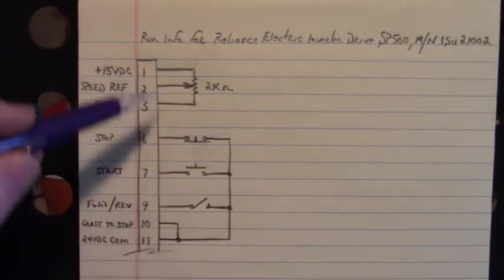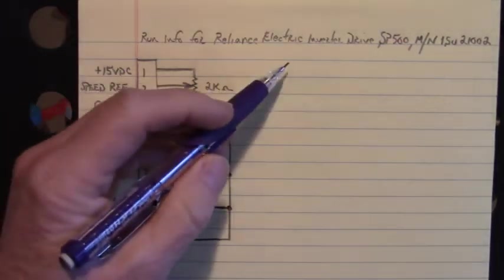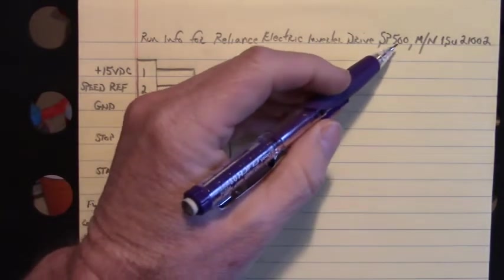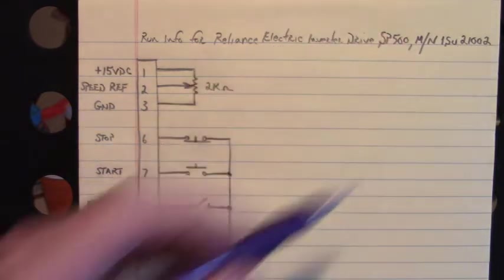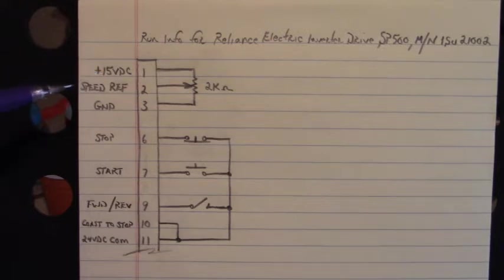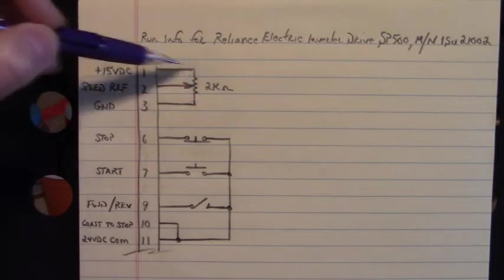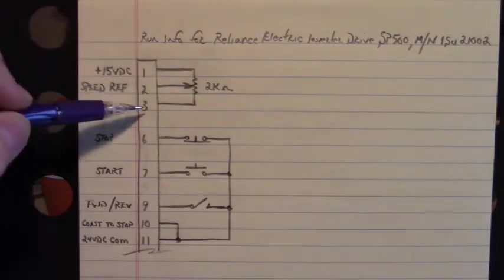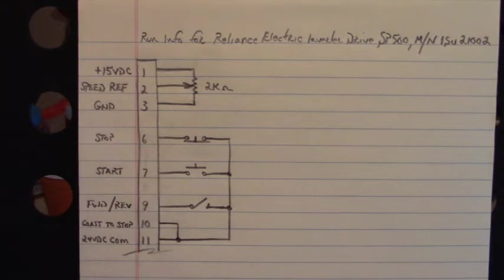Here are the control connections that I used to run that Reliance Electric Inverter Drive SP500 model number 1SU21002. Up here on pin 1, 2, and 3 of the control terminal board is the speed reference input. On terminal 1 we have plus 15 volts DC out to the potentiometer to power up the potentiometer and ground on pin 3. And the speed reference, pin 2, to the wiper of that potentiometer.